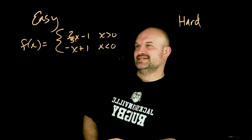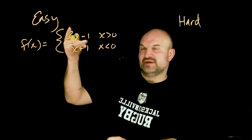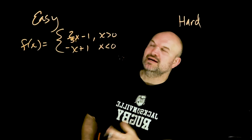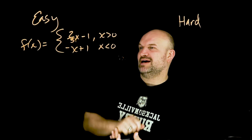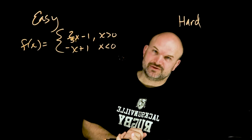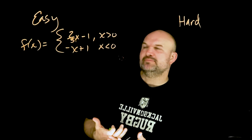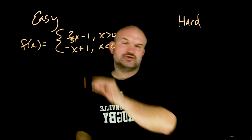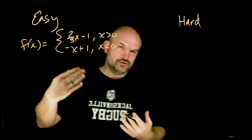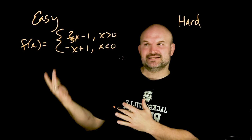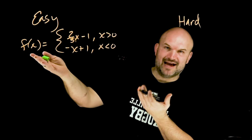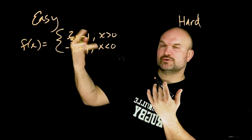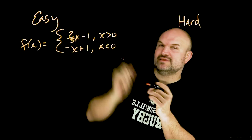In this first example, we have f(x) equal to two functions with restrictions. The first function is two x minus one, where x is greater than zero. The second is negative x plus one, where x is less than zero. A piecewise function is a combination of two or more functions with domain restrictions — we can't graph these two lines together on the same xy axis because it would fail the vertical line test. So we graph them independently with their domain restrictions.